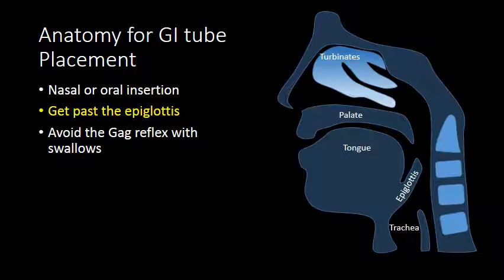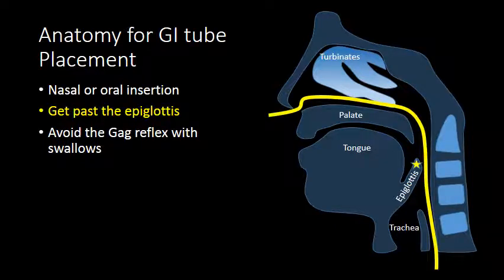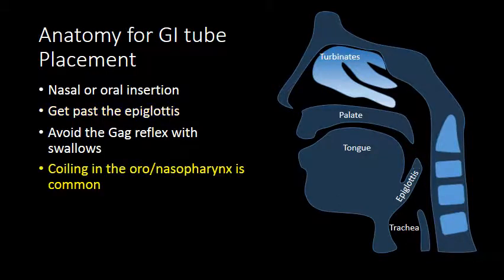Let's look at some basic anatomy. Most tubes are placed either through the nose or through the mouth. The biggest obstacle for placement of an enteric or gastric tube is getting past the epiglottis. Stimulation of the posterior nasopharynx or oropharynx can cause a gag reflex. Having the patient actively swallow can overcome that gag reflex and allow for the tube to pass into the esophagus. Coiling in the nasopharynx is a common occurrence when placing tubes, and this often occurs when the patient is gagging due to tube placement.